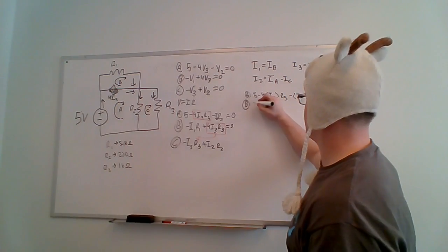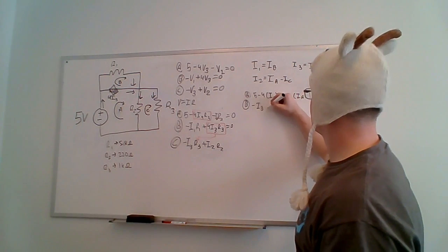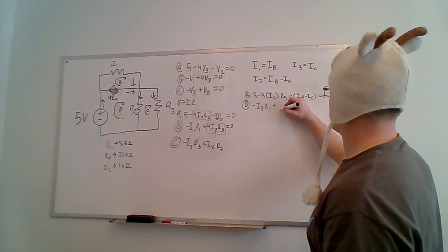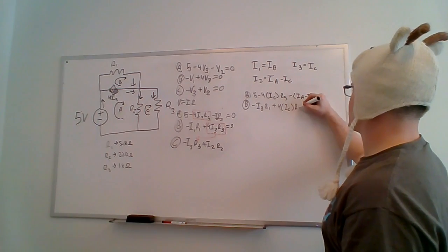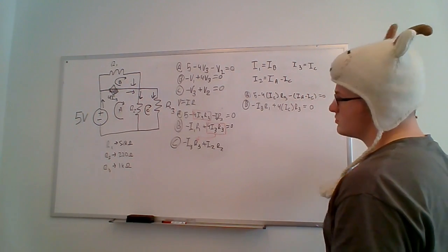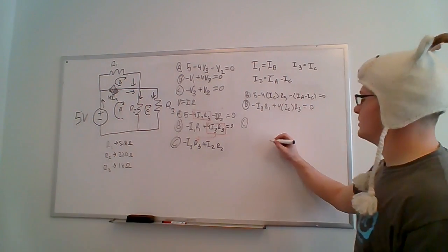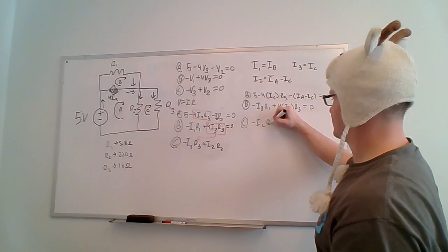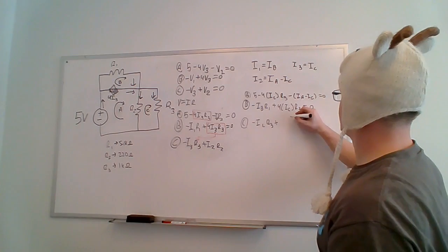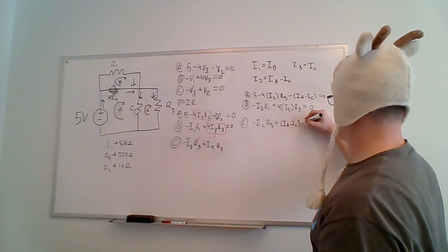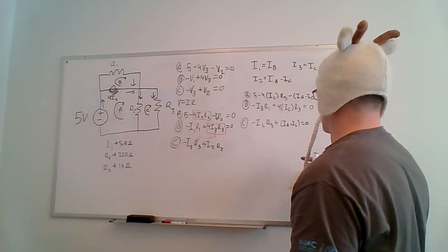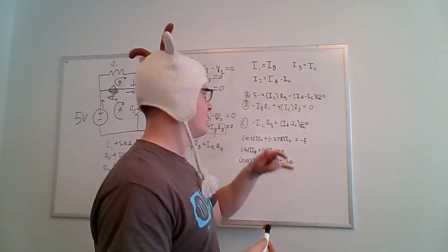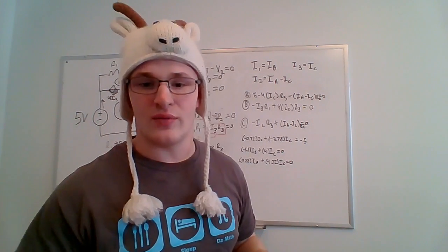Going back to our loops with substitutions: Loop A becomes 5 minus 4·IC·R3 minus (IA minus IC)·R2 equals zero. Loop B becomes negative IB·R1 plus 4·IC·R3 equals zero. Loop C becomes negative IC·R3 plus (IA minus IC)·R2 equals zero. Now we combine like terms, plug in values for R1, R2, and R3 to produce a system of equations.